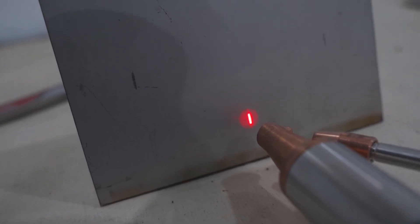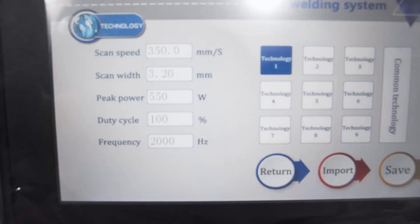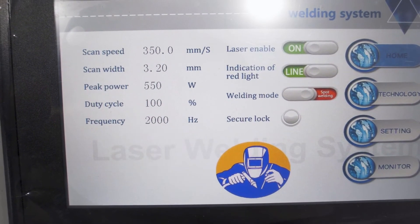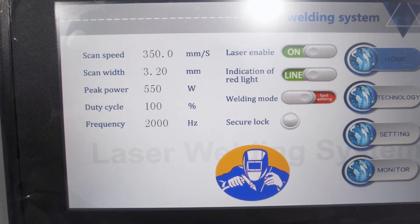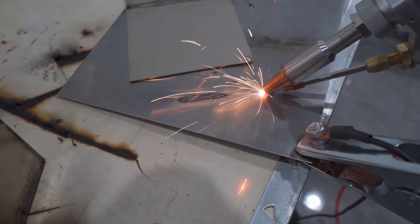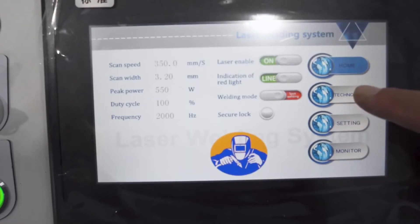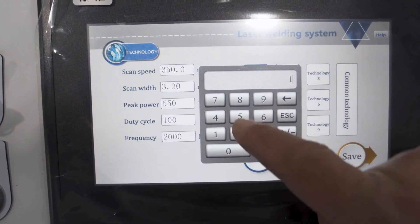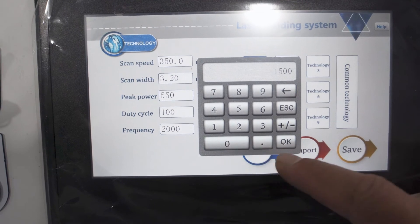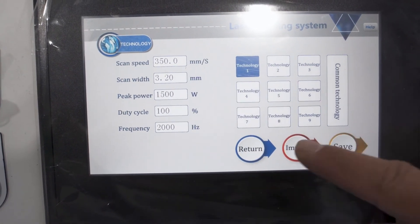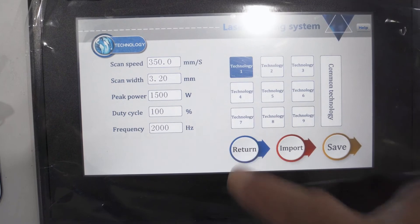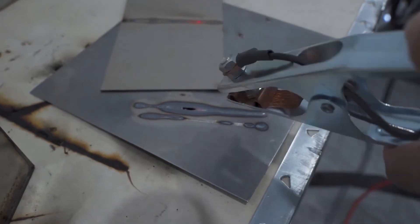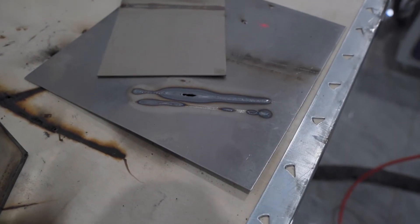The move speed is the first parameter. You can change the peak power in this place. Now it's 550W. Now we change the power from 550W to 1500W power. Save, import and return. You can see now the laser is more powerful.